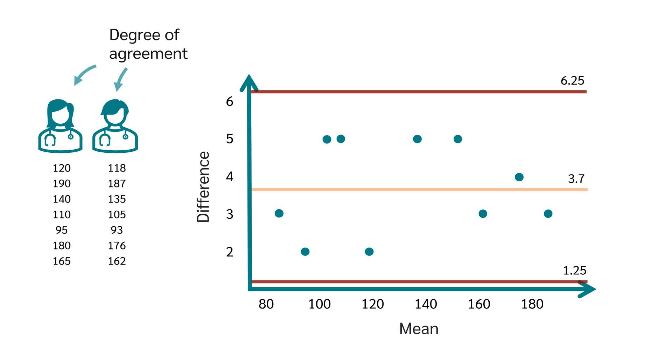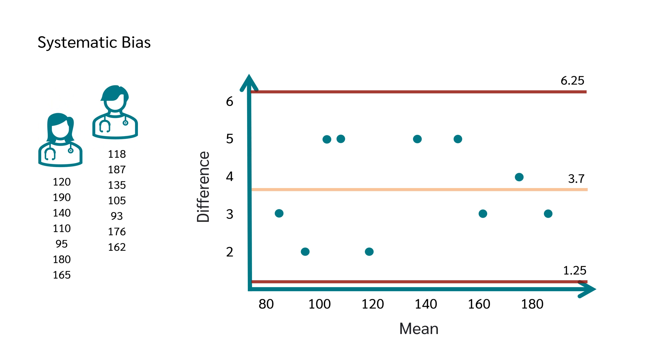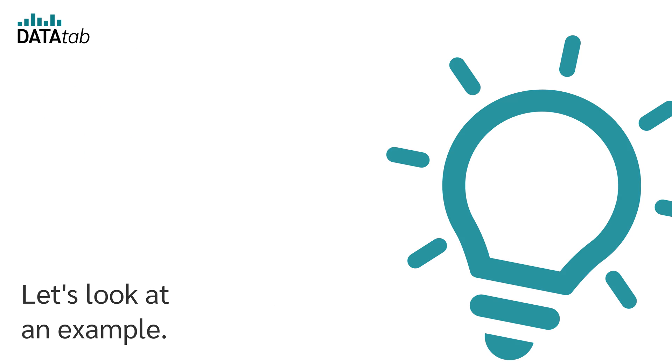This helps to visualize the degree of agreement between two raters and to identify any systematic bias. Let's look at an example.